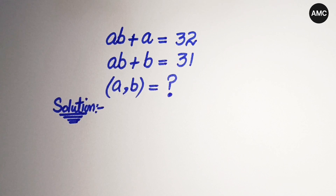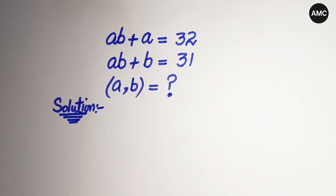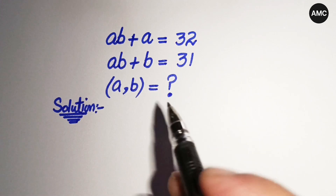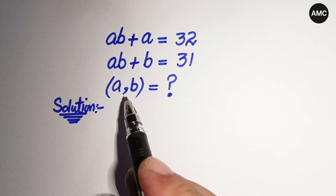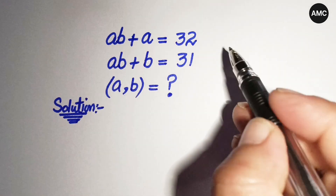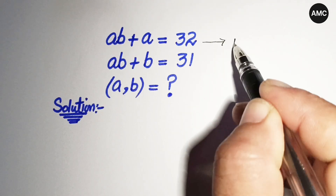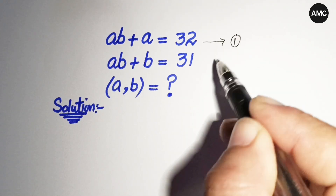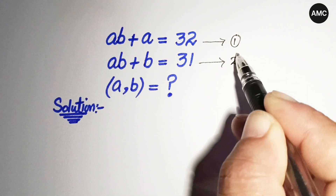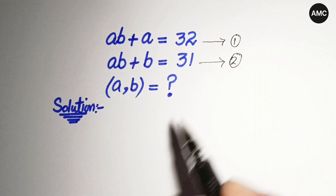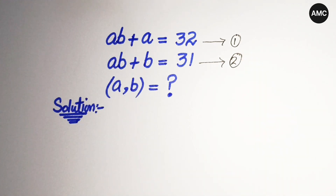Hello everyone, welcome back to Minimates Club. Today we have a nice algebraic problem: a times b plus a is equal to 32, and a times b plus b is equal to 31. We have to find the value of a and b. This is equation 1 and equation number 2. Let's start our solution.